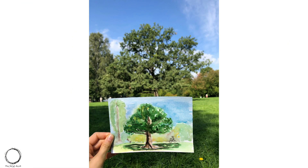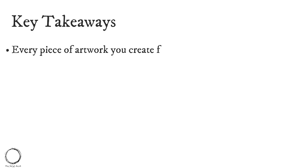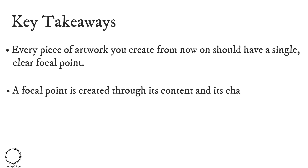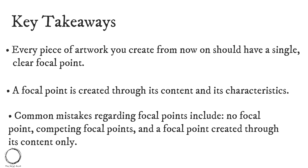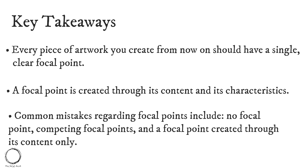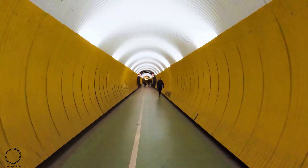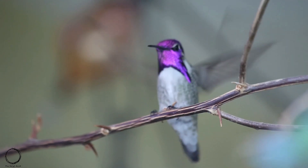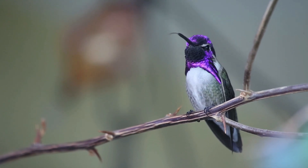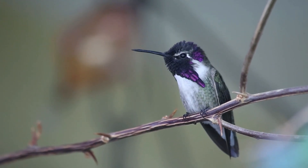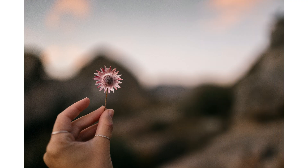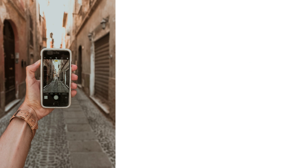Here are some key takeaways: every piece of artwork should have a single clear focal point; a focal point is created through both its content and its characteristics; and common mistakes include having no focal point, competing focal points, or a focal point defined only by its content. With these takeaways we come to the end of the video. These characteristics will add to your knowledge of design and art and help you choose the right options in NATA or JEE observation questions. Let me know in the comments what more topics you want covered, and wait for parts 2 and 3 of the composition video.